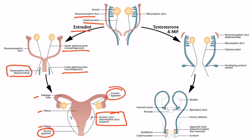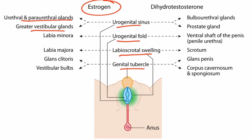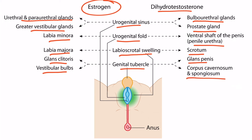Now let's discuss external genitalia. This is an image of undifferentiated external genitalia. We can see four important structures: the urogenital sinus, urogenital fold, labioscrotal swelling, and genital tubercle. In the presence of estrogen, the external female genitalia are formed, including the urethral and paraurethral glands, the greater vestibular glands, the labia minora, labia majora, glans clitoris, and vestibular bulbs. In the presence of dihydrotestosterone, the external male genitalia are formed, including the bulbourethral glands, prostate gland, ventral shaft of the penis or penile urethra, the scrotum, the glans penis, and the corpus cavernosum and spongiosum. Knowing the nitty-gritty details of this image is actually pretty low yield, but we've included them for completeness.